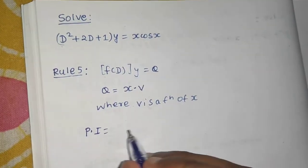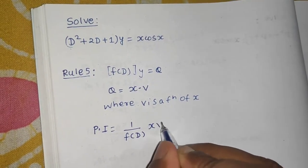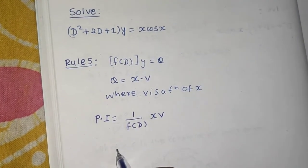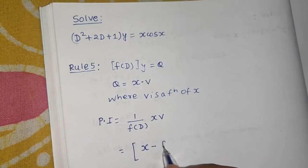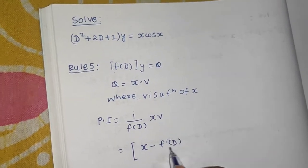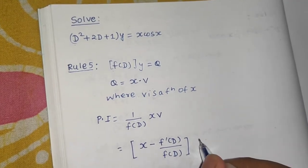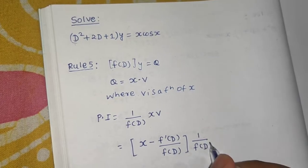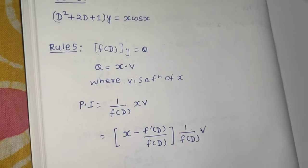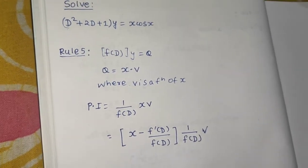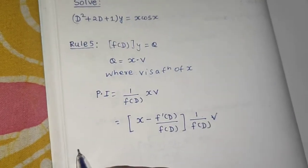The particular integral in this case is given by (1/f(D)) · x·v. The formula works out as: x minus the derivative of the denominator f'(D) divided by f(D) itself, with 1/f(D) operating on v only. This is the basic setup for Rule 5.